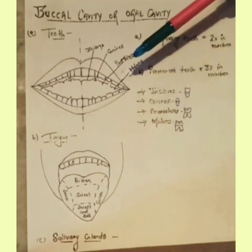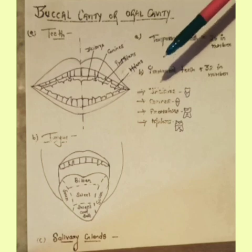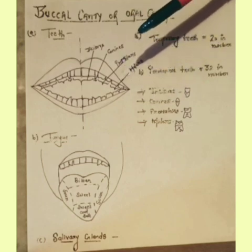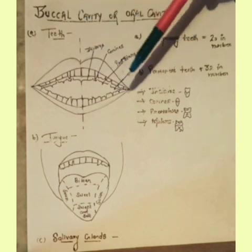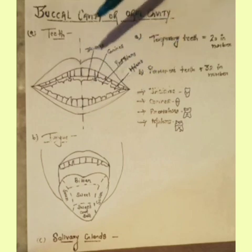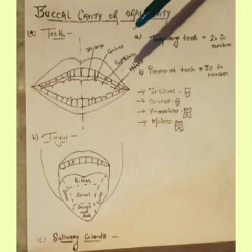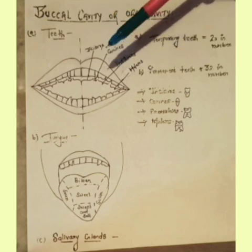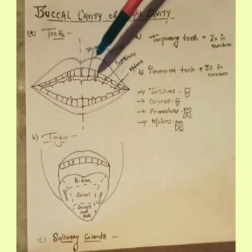Bacteria are present in our mouth. If we do not clean our teeth properly, bacteria act on the food and produce an acid. This acid damages the teeth and results in a cavity. Such damage to teeth is called tooth decay. Bacteria grow faster on sweet and sugary products. Sometimes bacteria, food particles, and saliva form a thick layer on the teeth which is known as plaque.